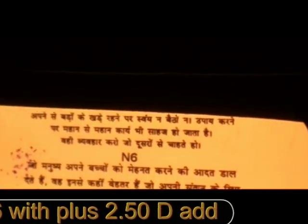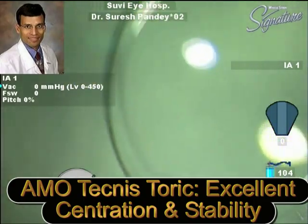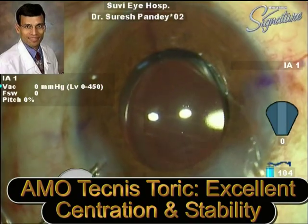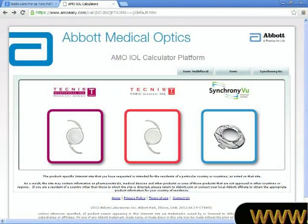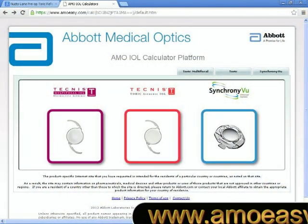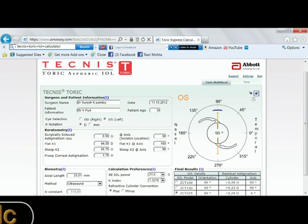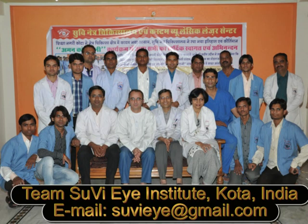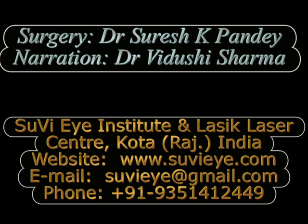To summarize, this is a new toric IOL which has now become available. It has excellent centration and stability, and also comes with the amoeasy.com toric calculator website which is very user-friendly and can be used to calculate the model of IOL that needs to be implanted. Thank you.